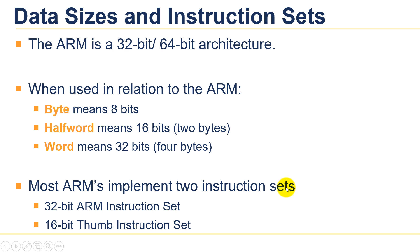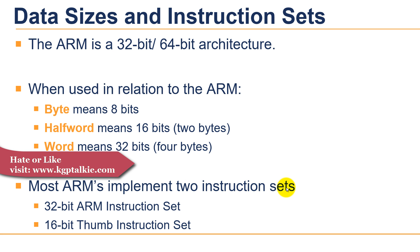Currently ARM processor microcontrollers have 32-bit as well as 64-bit architecture. Throughout this tutorial, 'byte' means 8-bit, 'half word' means 16-bit, and 'word' means 32-bit. There are actually three instruction sets in modern ARM cores such as version 7 cores like A8, M3, and R4, and version 8 cores such as M7.